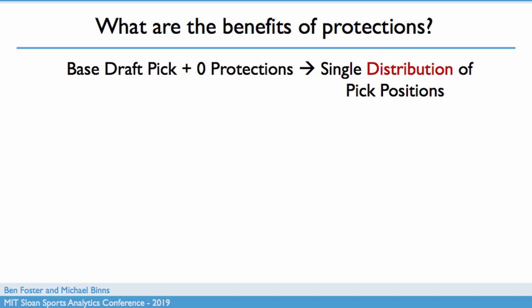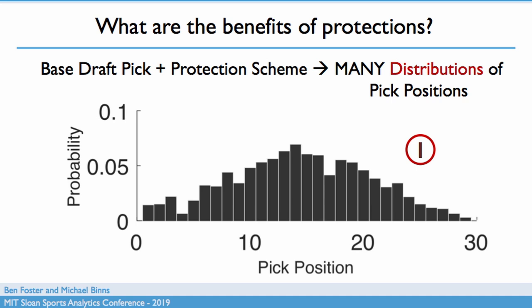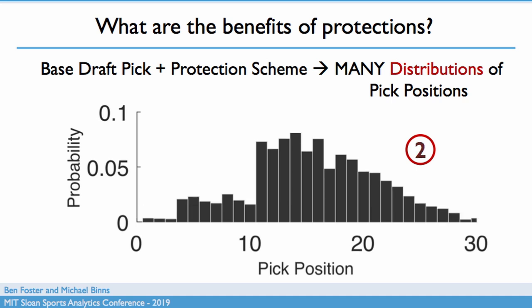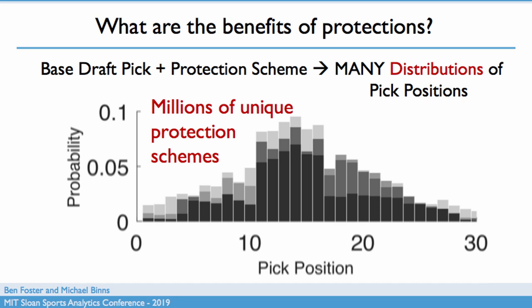What are the benefits of protections? To understand that, we need to understand what a base draft pick looks like. It looks like a distribution of possible pick position outcomes. At some point in the middle of the year, you're uncertain how you're going to finish, you're uncertain the results of the draft lottery. If you were to trade it, you'd be giving a team this set of probable outcomes. If you add protections, you can change the distribution of picks. It turns out there are actually millions of ways to do this, which means you can take that base draft pick and give it millions of different values as a trade asset.